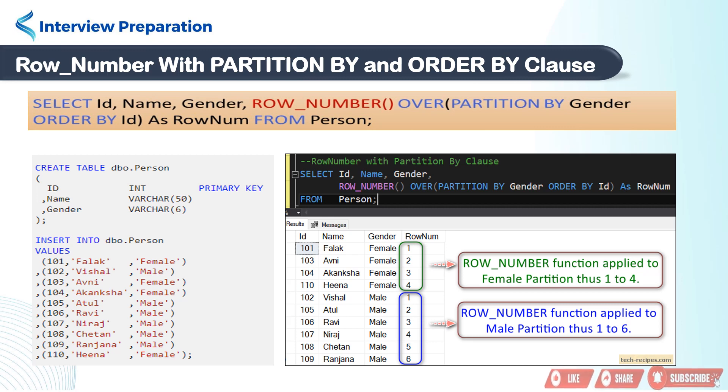In total, we have 11 rows, thus first partition window created for female having 4 rows. ROW_NUMBER function is applied to each row in female partition, so assigning a number from 1 to 4.